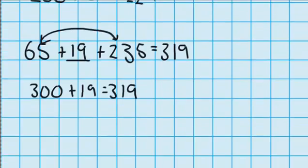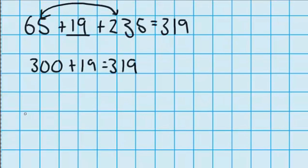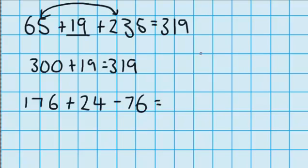Now let's have a look at an example which has got some subtraction in it. I have 176 dollars in my bank account. I've been doing some jobs and I've managed to save up another 24 dollars and then I buy a new cricket bat which costs me 76 dollars. I want to work out how much money do I have left.